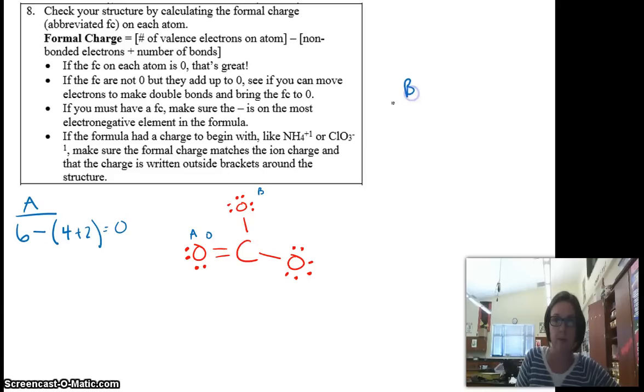For oxygen type B, we have 6 valence electrons for an oxygen minus 1, 2, 3, 4, 5, 6 non-bonded electrons and 1 bond. So that adds up to 7. 6 minus 7 is going to be negative 1. So the formal charge on oxygen type B, they're negative 1. They're both going to be negative 1.